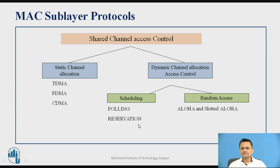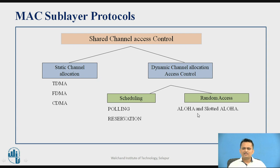How to solve the channel allocation problem? Shared channel access can be controlled by static channel allocation using TDMA, FDMA, and CDMA. Static schemes perform better when all nodes have sufficient data. But if nodes do not always have data, dynamic allocation is needed — either through scheduling using polling or reservation, or through random access using Aloha or slotted Aloha, or by using CSMA or CSMA-CD.